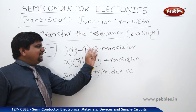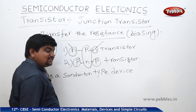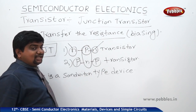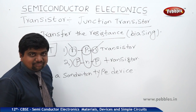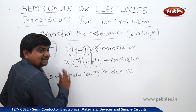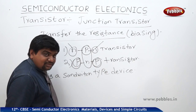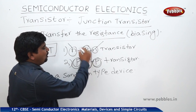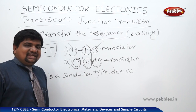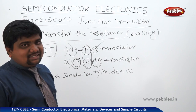In an NPN transistor, there are two N-type semiconductors with one P-type semiconductor in between. In a PNP transistor, there are two P-type semiconductors with one N-type semiconductor acting as the middle layer between them.